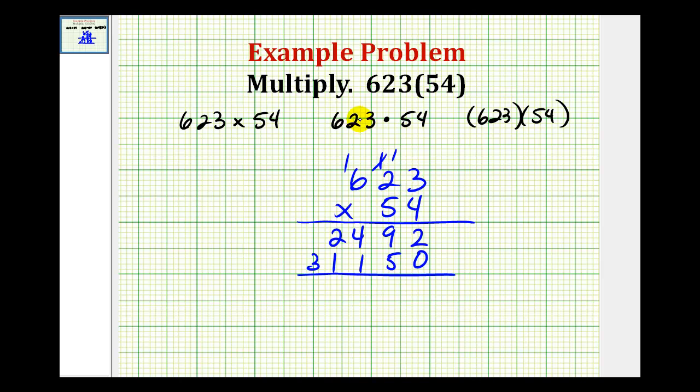And now, we go ahead and find this sum. 2 plus 0 is 2. 9 plus 5 would be 14. Carry a 1. 1 plus 4 plus 1, that would give us 6. 2 plus 1 is 3. And we have a 3 here. So, our product is 33,642.